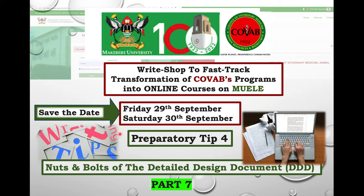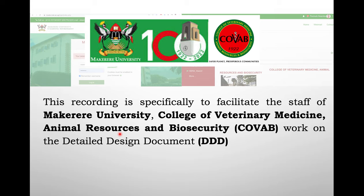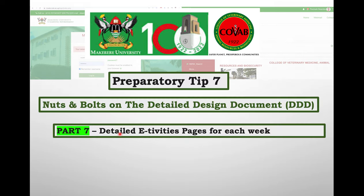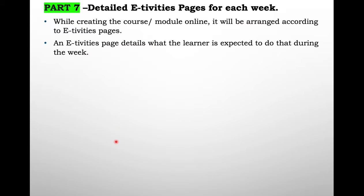Tip 4 deals with Part 7, and Part 7 is the formulation of the detailed ETVT pages for each week. While creating a course or module online, it will be arranged according to ETVTs. ETVT pages detail what the learner is expected to do during that week. It's quite vast and detailed, but yet simple.